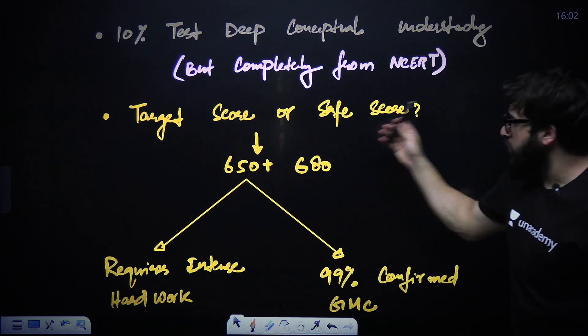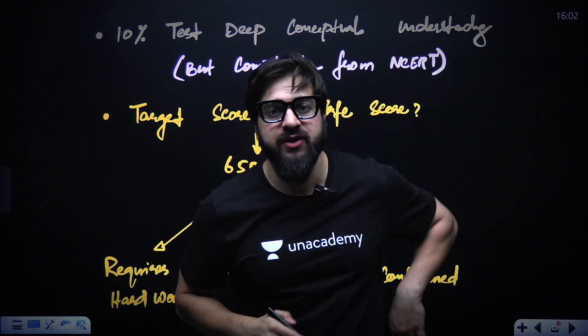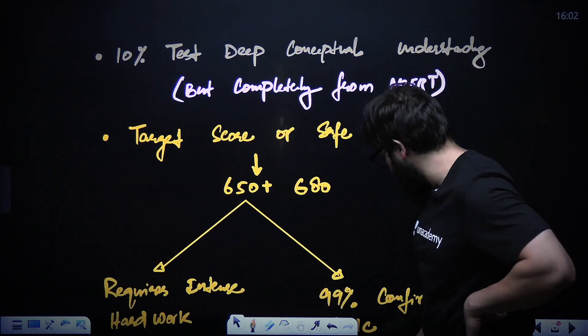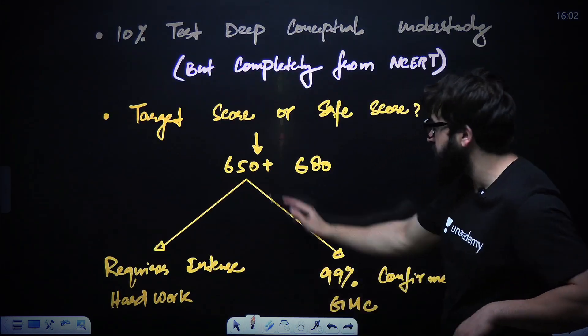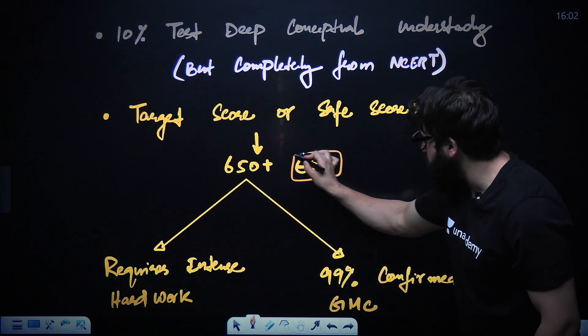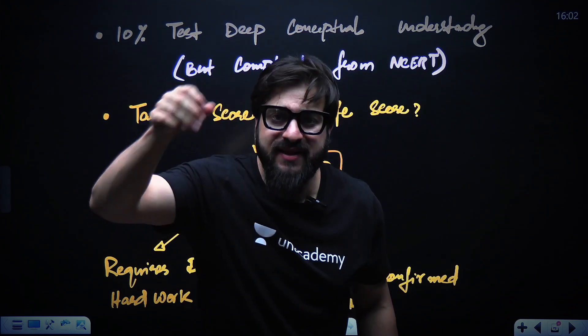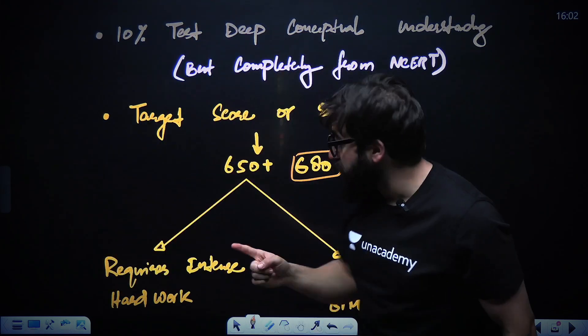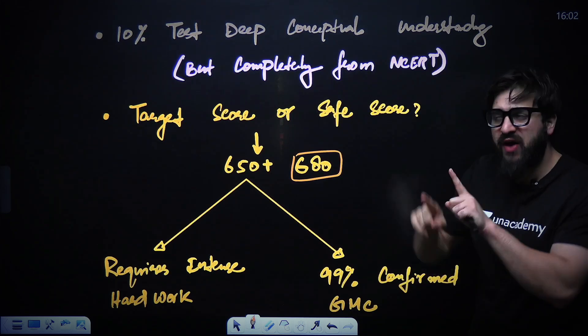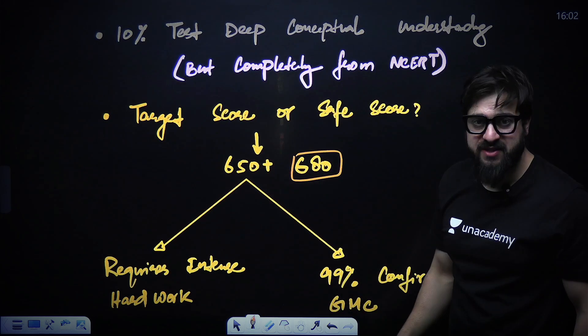Then we say target score or the safe score. What should you keep the target score when it comes to NEET 2025? I say you should keep your target score 650 plus. And most importantly, I would want you guys to keep your target score as 680 because if you keep the target score high, then it becomes very easy for you to score 650. So keep it 680 from now itself and study accordingly.